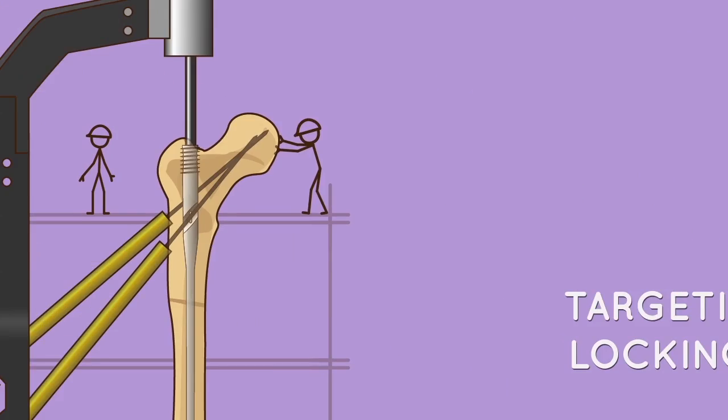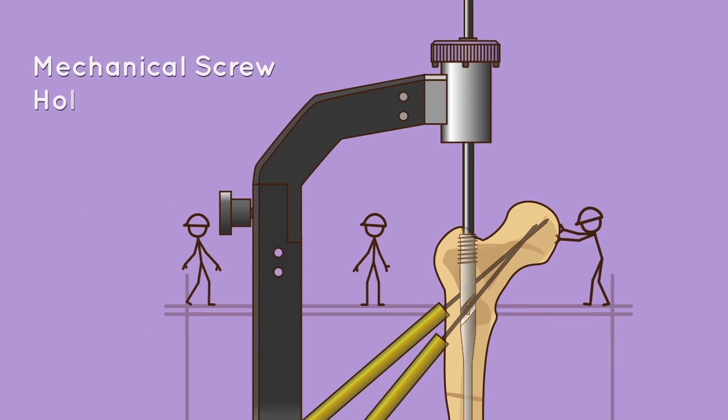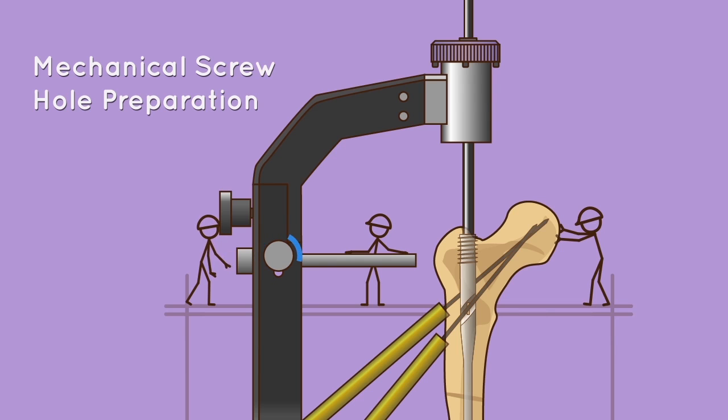Targeting device locking optional mechanical screw hole preparation: mount the mechanical screw sleeve into the proximal hole of the lag attachment. Secure by tightening the set screw. Do not over tighten. Ream to stopper using the mechanical screw drill.